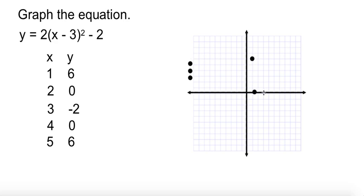1, 6. 2, 0. 3, negative 2. 4, 0. And 5, 6. And then all I have to do is draw my parabola.